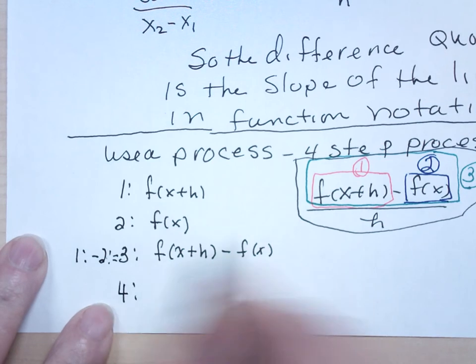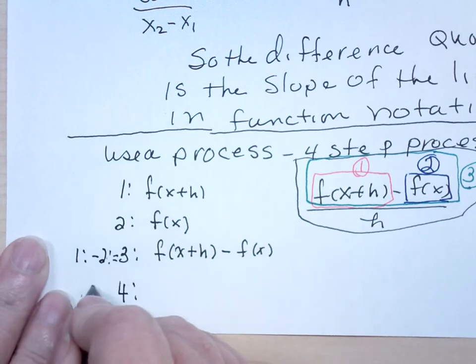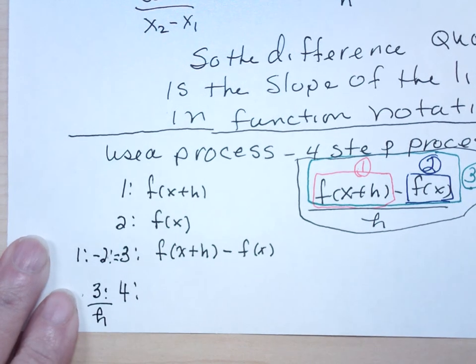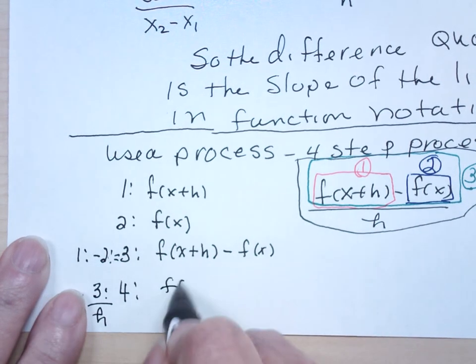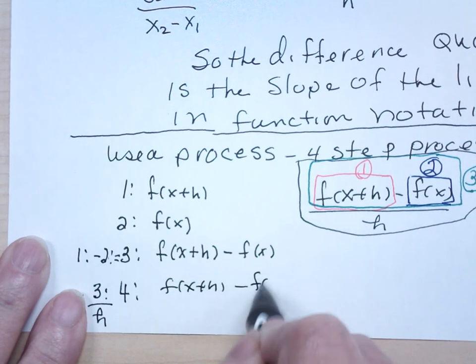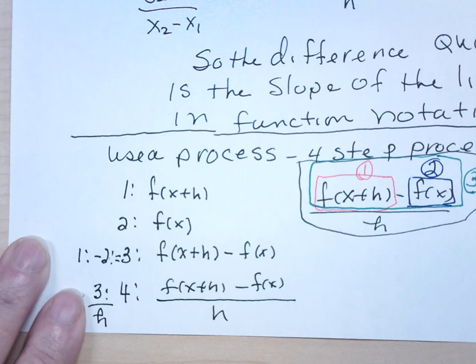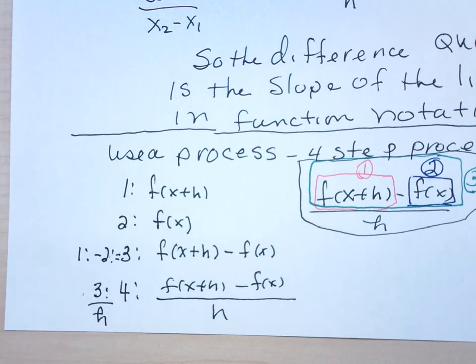Step four takes what I've got in step three, divides that by h. That's termed the four-step process.